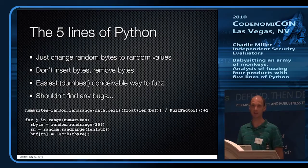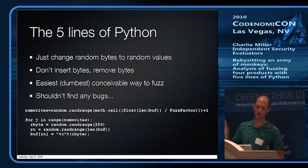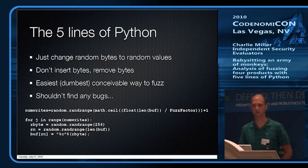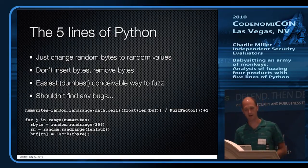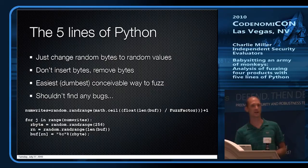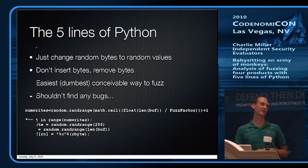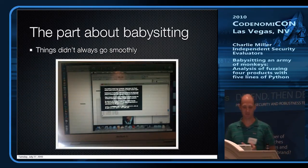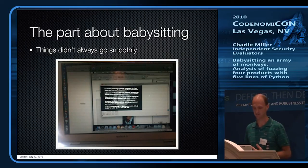I didn't really expect to find much — maybe something in OpenOffice, but for high-quality code I wouldn't expect to find much like this. But actually I did. So why did I call this talk 'Babysitting Army Monkeys'? Because I turn it on and expect to come back in three months, but it doesn't work that way. Things crash. This is a kernel panic on my Mac OS X computer that was fuzzing.